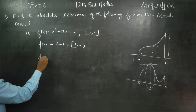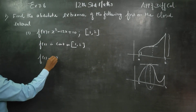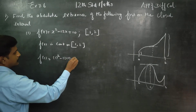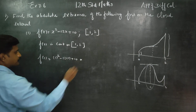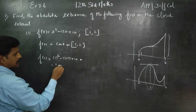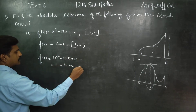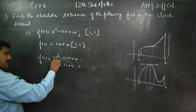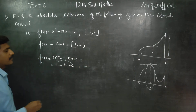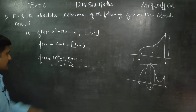First, find f of 1. f(1) = 1 squared minus 12 into 1 plus 10. That is 1 minus 12 plus 10. Your answer will be minus 1.